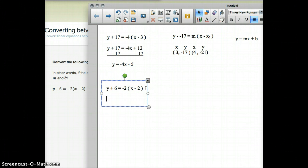So the first step, as we said, is to distribute this negative 2 right here. So y plus 6 equals negative 2 times x is negative 2x. Negative 2 times negative 2 is a positive 4. So now we've got it to this level.